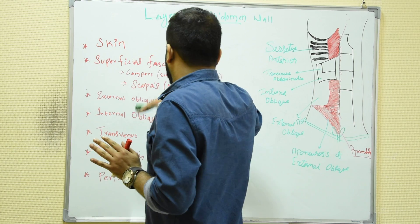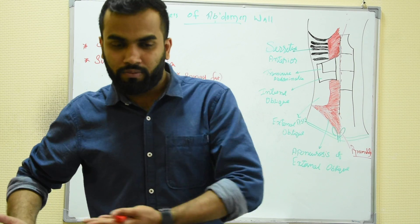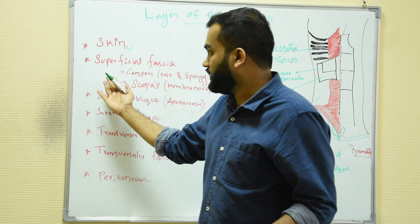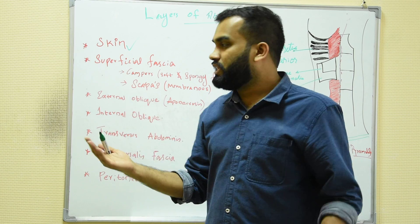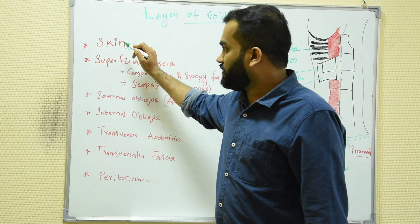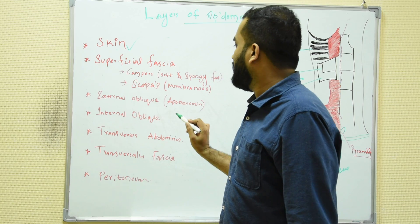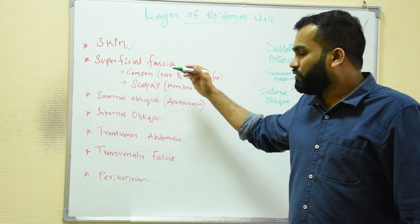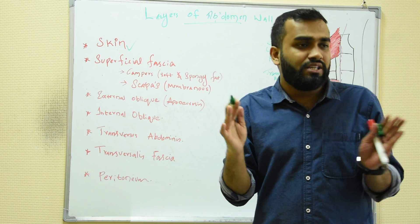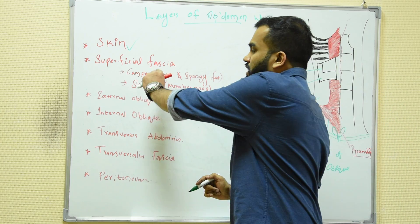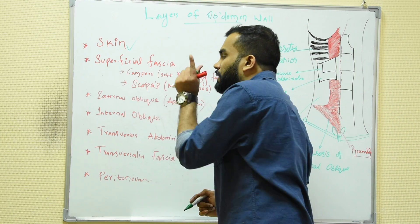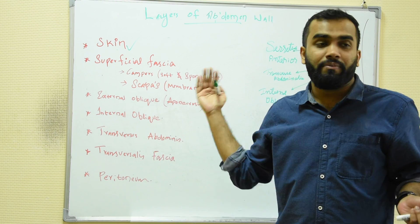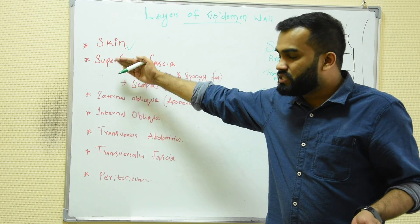First we have to know the layers in the abdomen. If I am cutting my abdomen from the lateral side, first we cut the skin, then we have the superficial fascia. The superficial fascia includes two layers: Camper and Scarpa. Remember, Camper means soft and spongy fat, and Scarpa means membranous. This is also asked in MCQs.